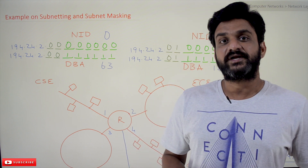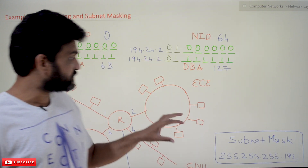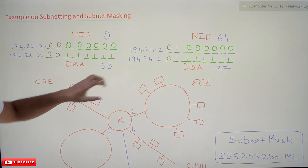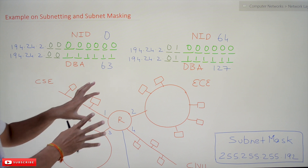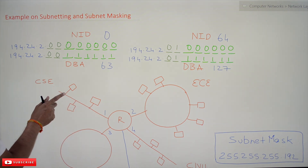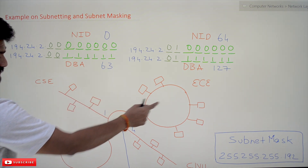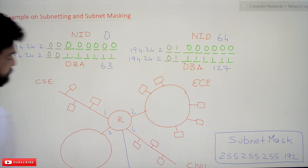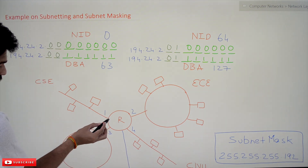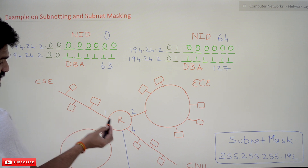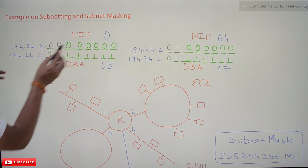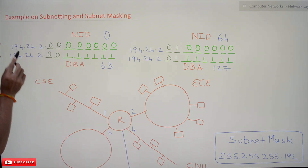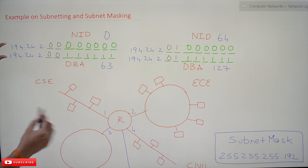In our previous class we covered an example where we took a university and created four labs using subnetting. This is subnet one, this is the second subnet, third subnet, and fourth subnet. These are the interfaces — through interface one things get transmitted to this network, interface two, interface three, and interface four. We have seen the subnet IDs and the IP addresses for each subnet.